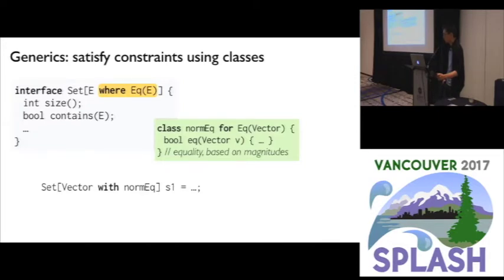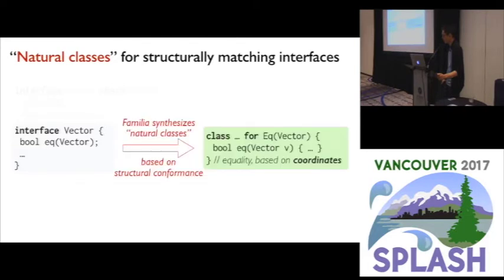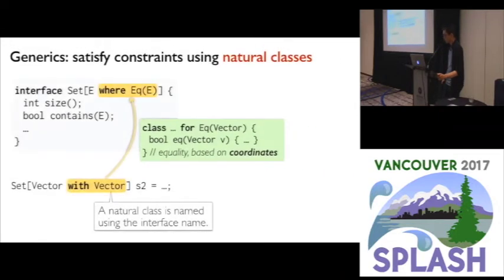WHERE clause constraints are satisfied using WITH clauses. For example, we can use NormEQO to instantiate the Set interface — such a set considers two vectors equal if they have the same magnitudes. We may also use the natural equality of vectors based on coordinates. The Vector interface may have already specified an EQ method, and in this case Familia will automatically synthesize a class that satisfies EQ for Vector. We call such automatically generated classes natural classes, and a set of type Set of Vector with Vector uses the natural equality specified by the Vector interface.